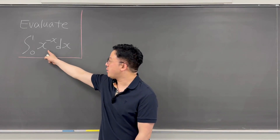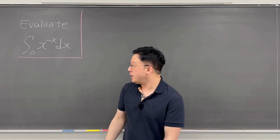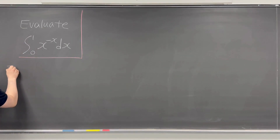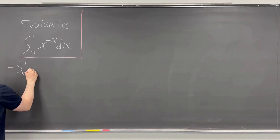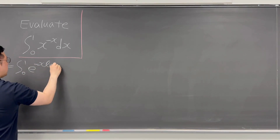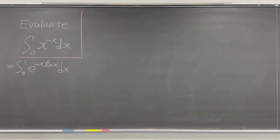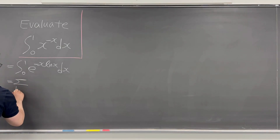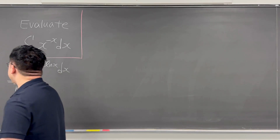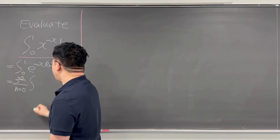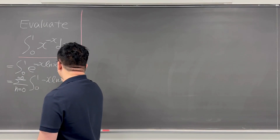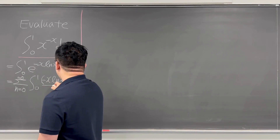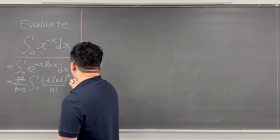What I'm going to do is rewrite this integral using e as the base. So this integral is the same as the integral from zero to one of e to the power of negative x times ln x, dx. Then we can use a summation to rewrite this again: the sum from n equals zero to infinity of the integral from zero to one of (negative x times ln x) to the power of n over n factorial, dx.